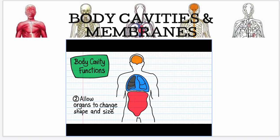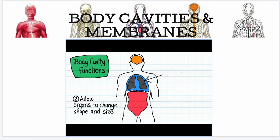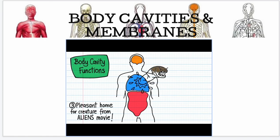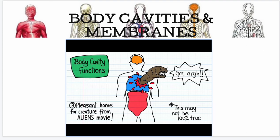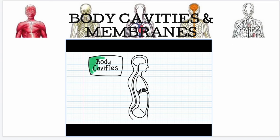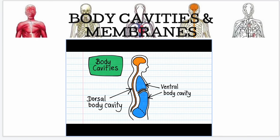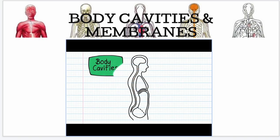Secondly, cavities allow internal organs to change shape and size — for example, our lungs, stomach, and bladder can all expand and contract because they sit inside cavities. The human body consists of two main cavities: the dorsal body cavity and the ventral body cavity. The dorsal body cavity can be divided into two parts: the cranial cavity and the spinal cavity.